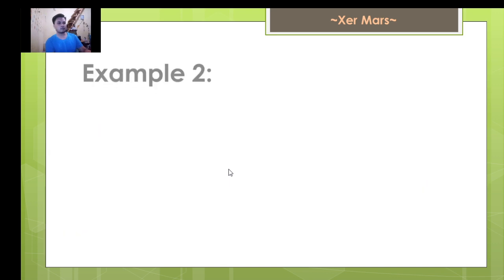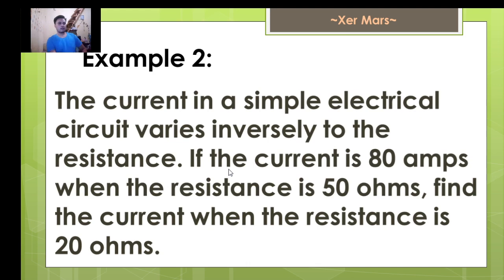Problem number two. The current in a simple electrical circuit varies inversely to the resistance. If the current is 80 ohms when the resistance is 50 ohms, find the current when the resistance is 20 ohms. So we are talking about current and resistance. And given, we have C1 as 80 ohms,